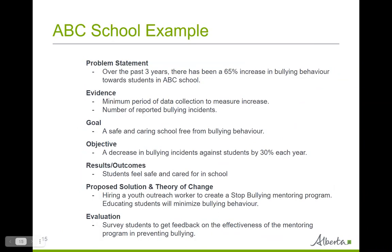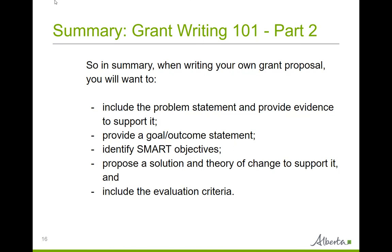In summary, at this point you have included the problem statement and provided evidence to support it, provided a goal or outcome statement, identified SMART objectives, identified some desired results and outcomes, offered a proposed solution and theory of change to support it, and may have included the evaluation criteria. If you're looking for a review checklist, there is one in the toolkit created by the Grantsmanship Center. When writing your own grant proposals, you will want to include the problem statement with supporting evidence, a goal and outcome statement, SMART objectives, a proposed solution and theory of change, and the evaluation criteria. The checklist will be helpful for knowing what sections you need to have in your proposals.